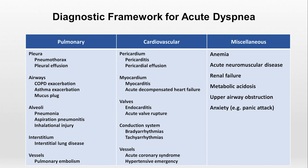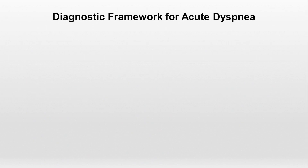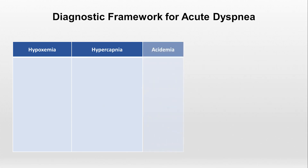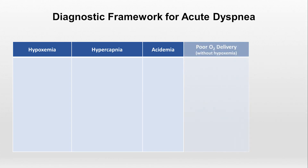One thing to consider when constructing diagnostic frameworks is that there is usually not one correct way to do it. For example, what if we did not want to use an organ system-based framework but instead wanted to consider physiologic mechanisms? We would need to think about what mechanisms are behind the development of dyspnea — what is the specific trigger for the sensation of shortness of breath? A person can feel short of breath because of hypoxemia, or low partial pressure of oxygen in the arterial blood, hypercapnia, or high partial pressure of carbon dioxide in the blood, acidemia, or low blood pH, poor oxygen delivery in the absence of true hypoxemia, and a few miscellaneous causes like mechanical loading of the respiratory system and psychiatric causes. We can reshuffle the specific etiologies from the previous framework into our new one.